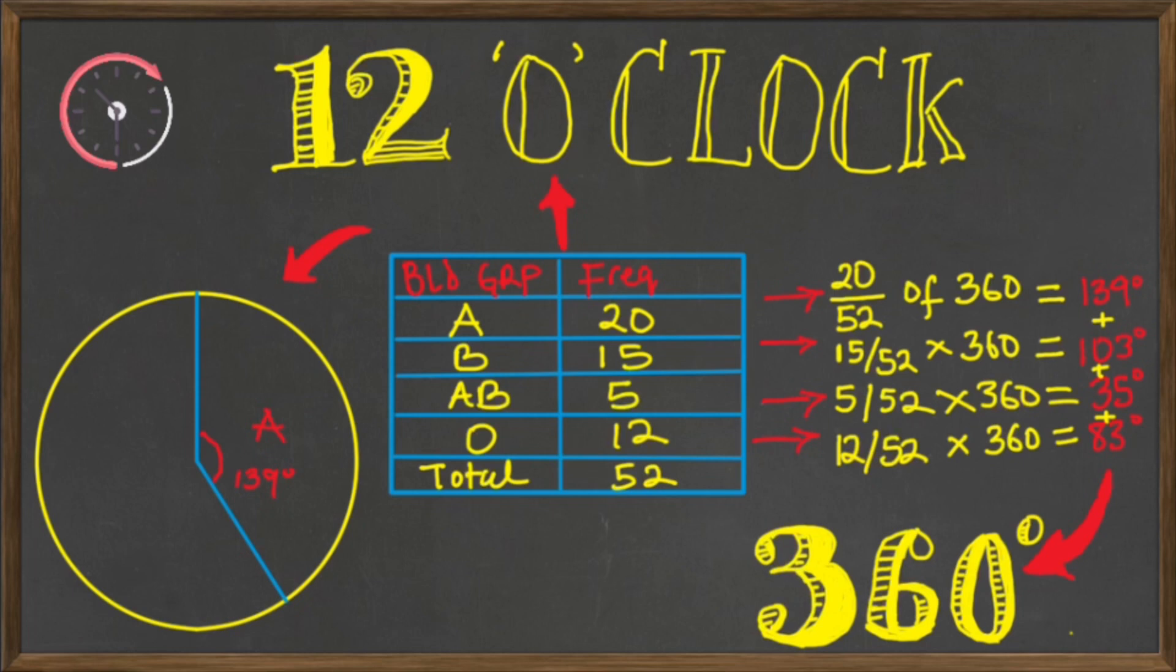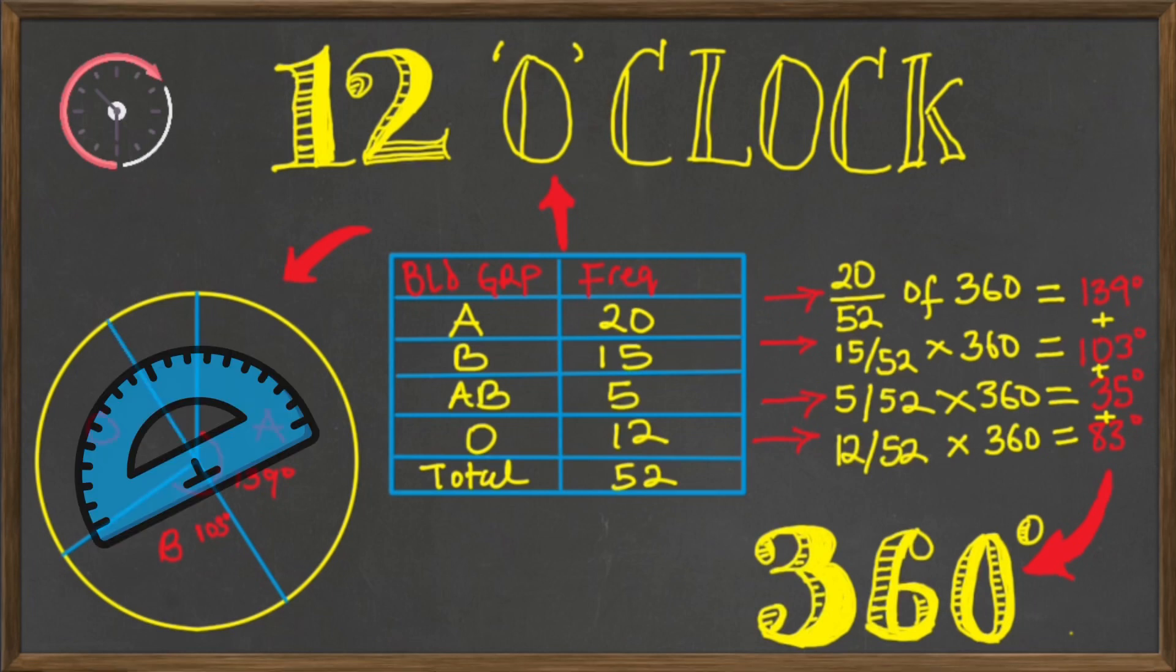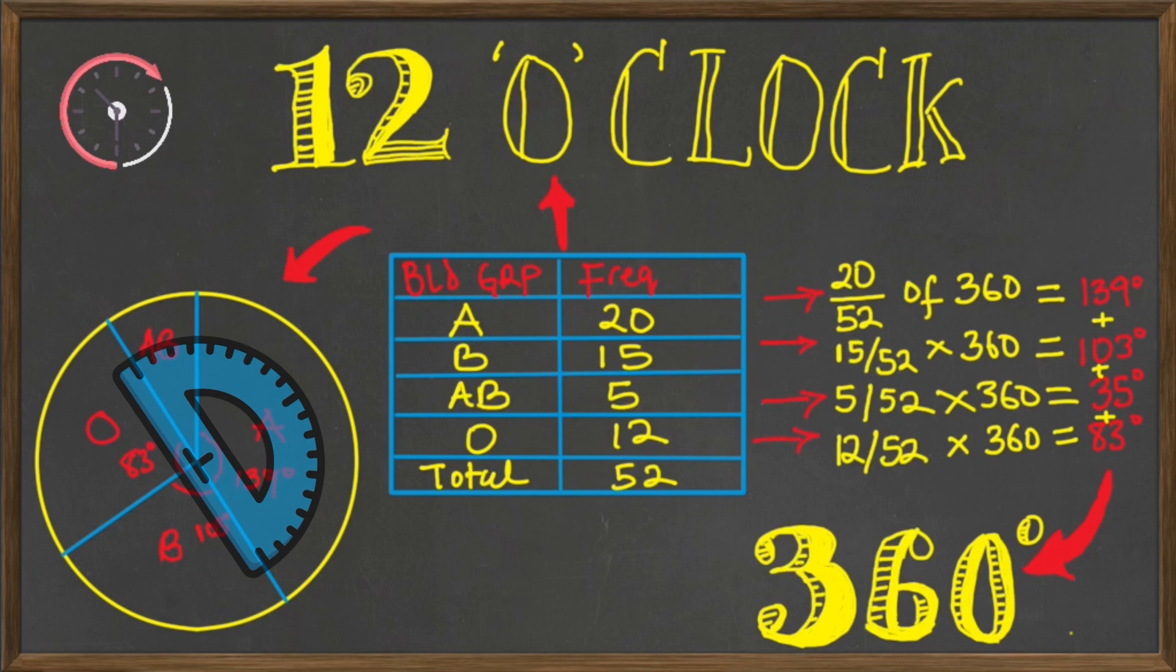And let's put in the next one. The next largest is for blood group B. And this had 103 degrees. And then next is 83 degrees for blood group O. And lastly is 35 degrees for blood group AB.